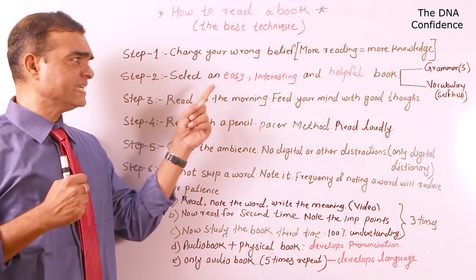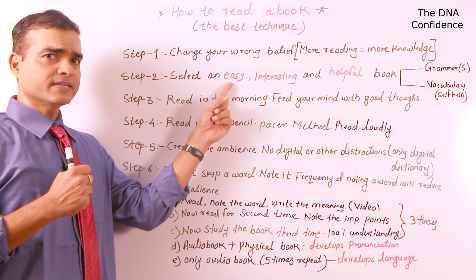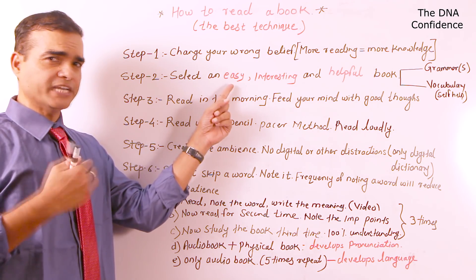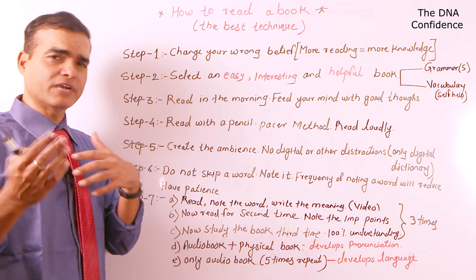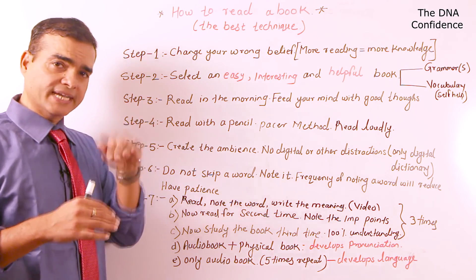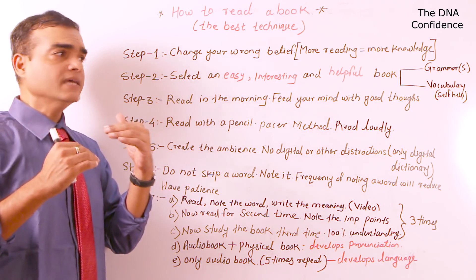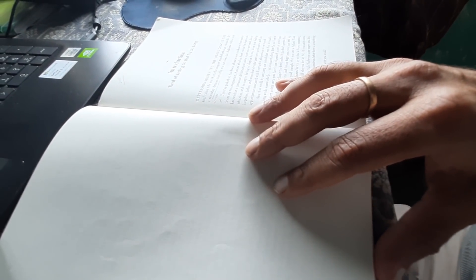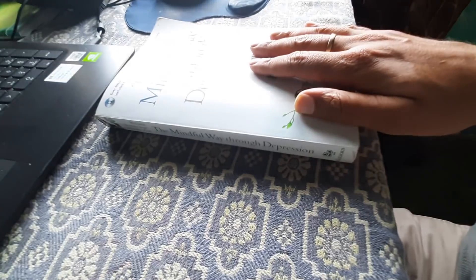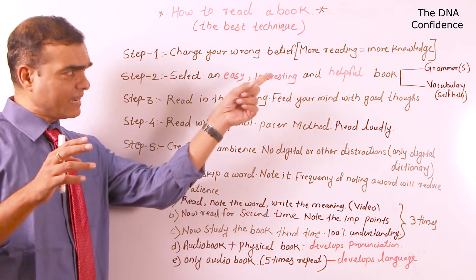Second, select an easy, interesting, and helpful book. Why easy? If the book is difficult and you have to refer to the dictionary very frequently, you won't be able to continue. Select a book which matches your level — take an easier book. Interesting, because we read what interests us. Many of us buy a book, read two pages, find it not interesting, and then it gathers dust in the cupboard. So be careful — select an interesting book, and also a helpful book.